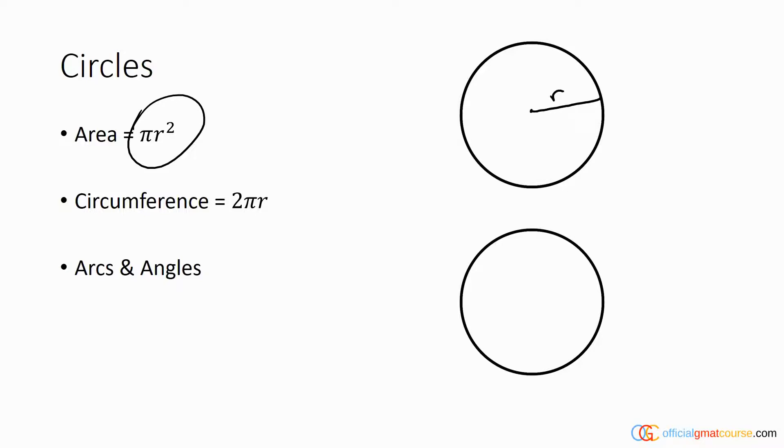If we had the distance all the way across the circle through the center, that would be the diameter, which is two times the radius. The distance across the circle varies depending on what points you connect, so it's important that you go through the center of the circle in order to create the diameter.